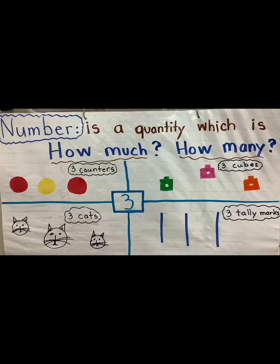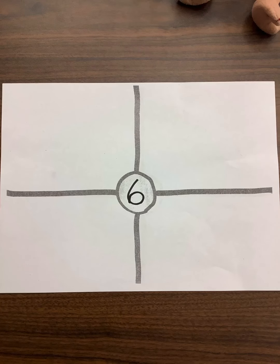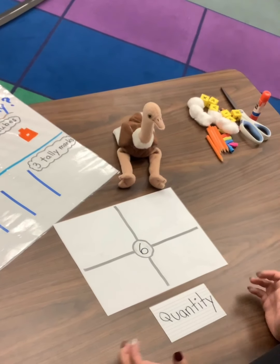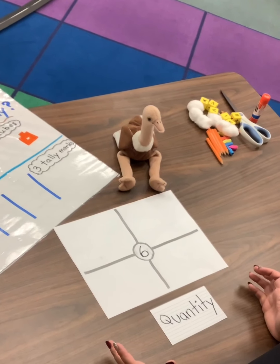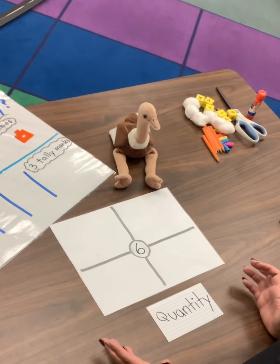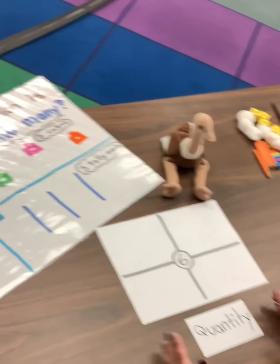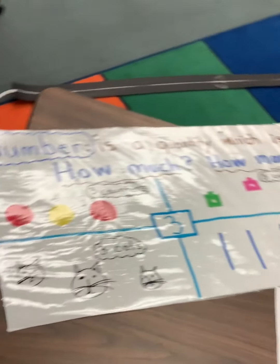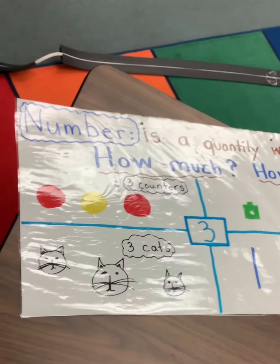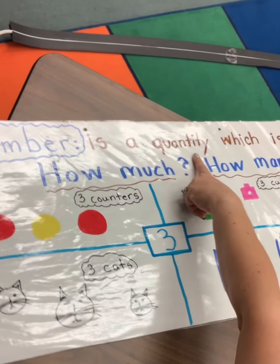Today in math class we learned about what is a number. A number is a quantity, which is how much or how many. All right boys and girls, today in class we started learning about numbers and what numbers are, and we learned a fancy word called quantity.